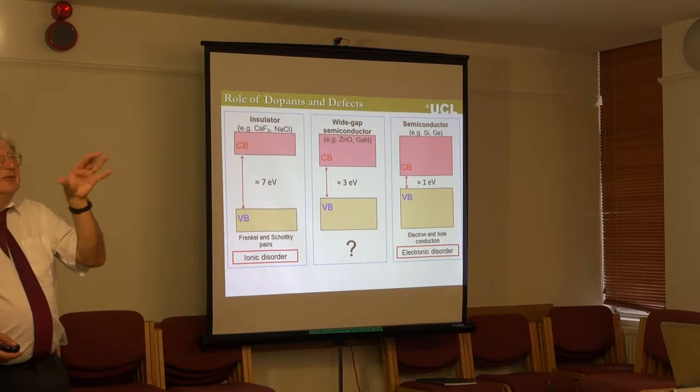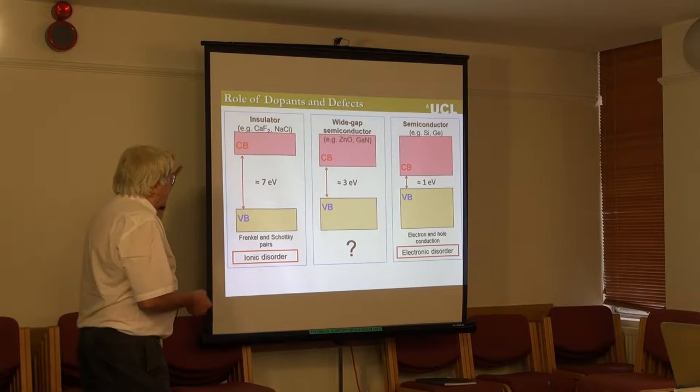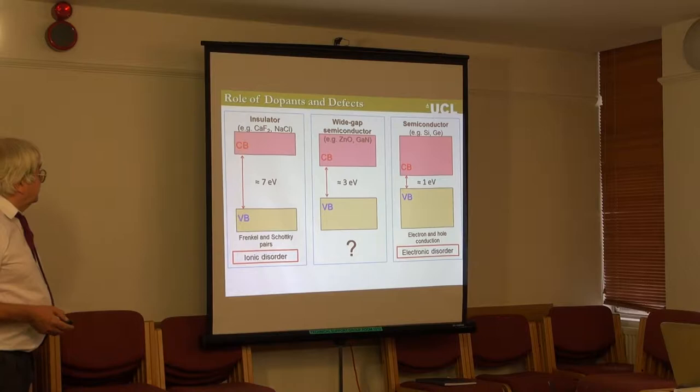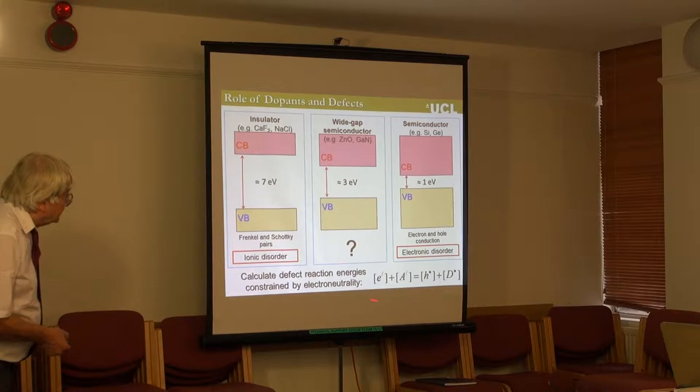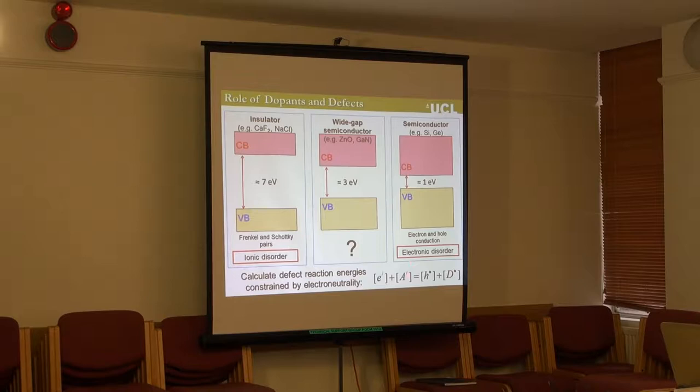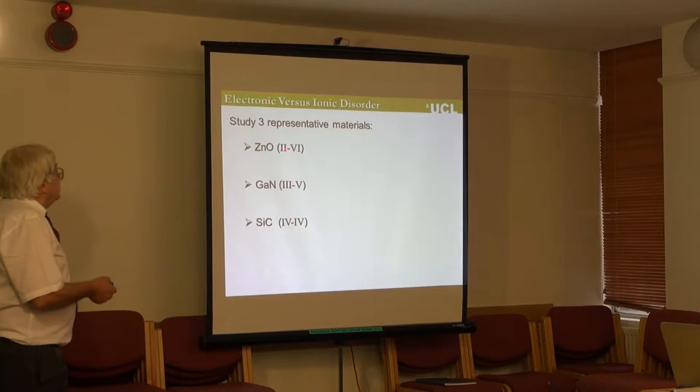The answer is that there's an equilibrium between the two, which depends on the magnitude of the band gap and on the formation energy of the point defects. What we're going to do is show how, by calculating the defect energies accurately, we can get a handle on this equilibrium between point defect and electron compensation.